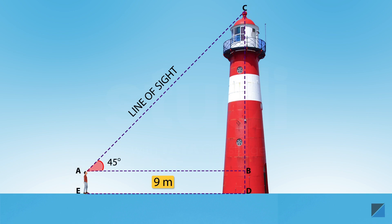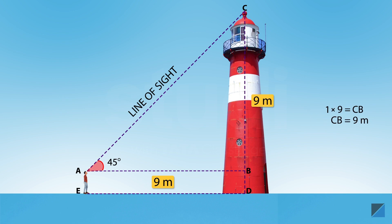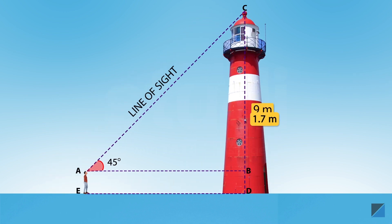Using the trigonometric ratio, we get tan(45°) = CB / AB. We know that tan(45°) is 1 and AB is 9 meters, so on solving we get CB equals 9 meters. Next, BD equals your height, which is say 1.7 meters. So the height of the tower is CB plus BD, that is 9 meters plus 1.7 meters, which equals 10.7 meters.